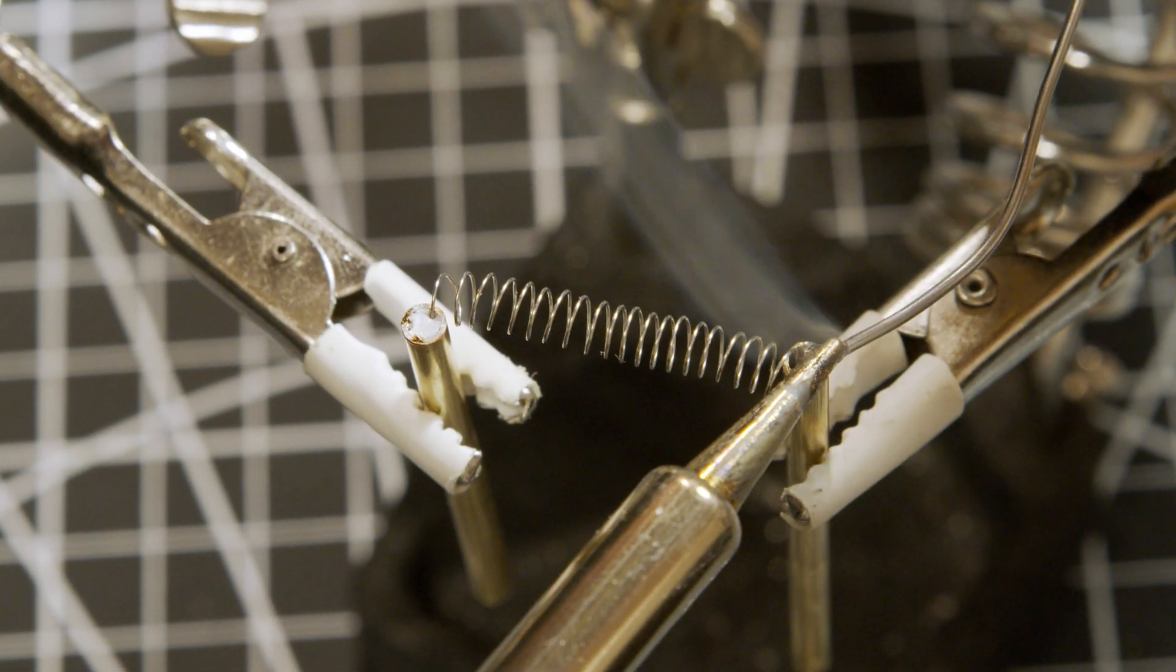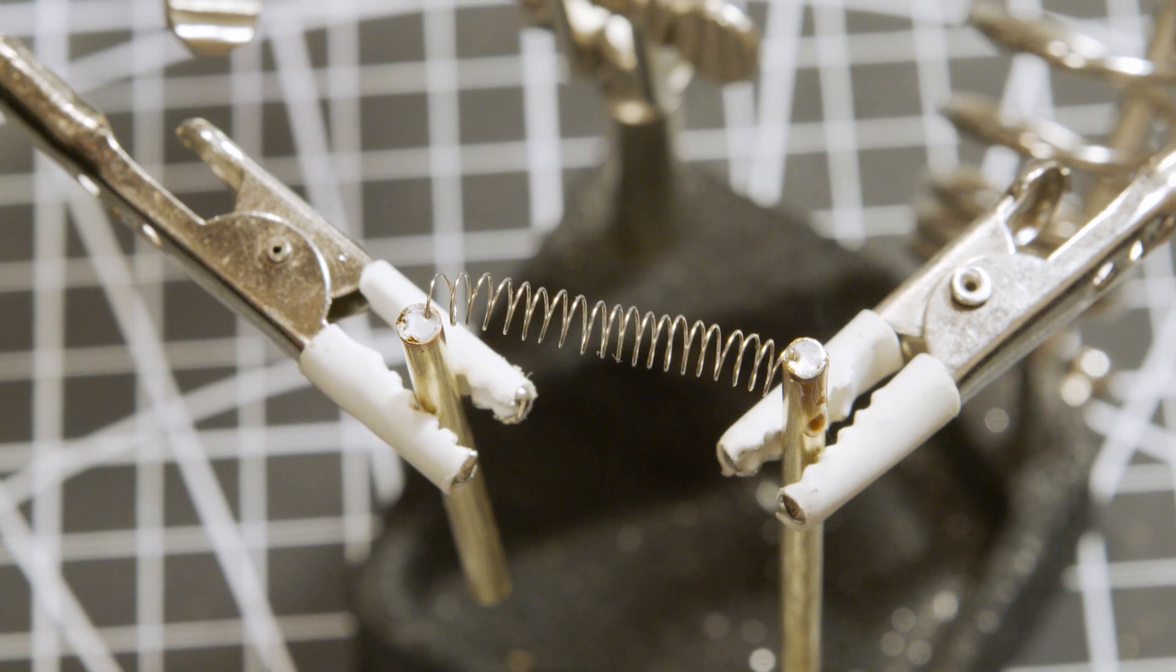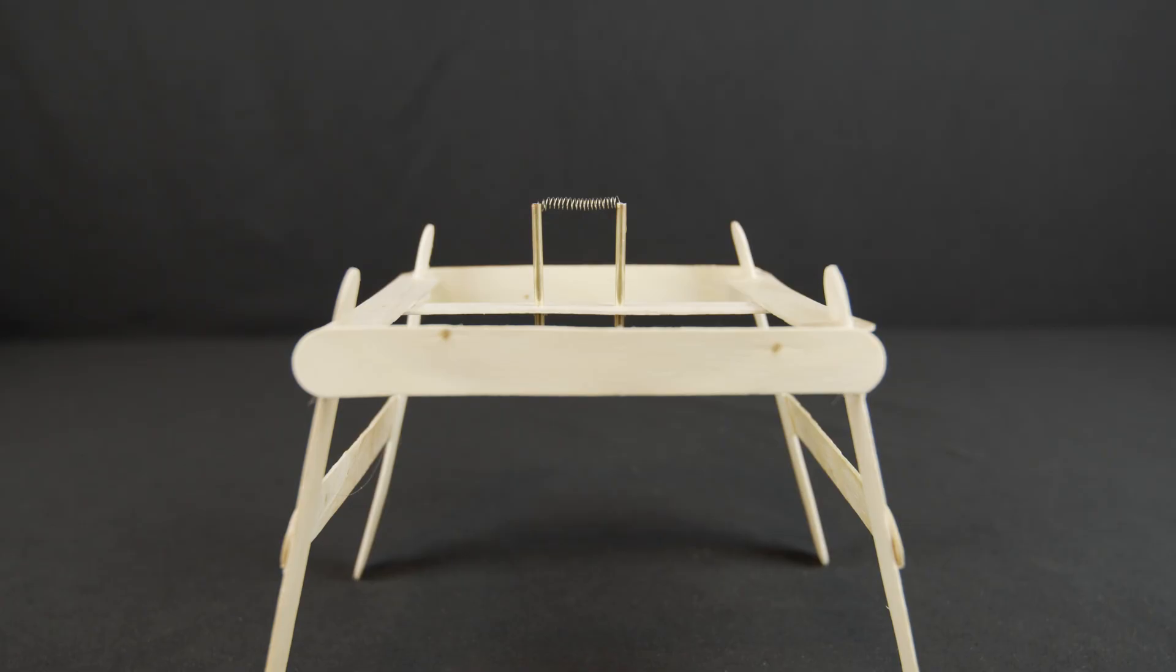Then I add a bit of solder to bond the tube to the coil. These tubes will act as both electrical conductors and heat insulators. To hold this apparatus, I got a few pieces of popsicle sticks and built a stand for it.